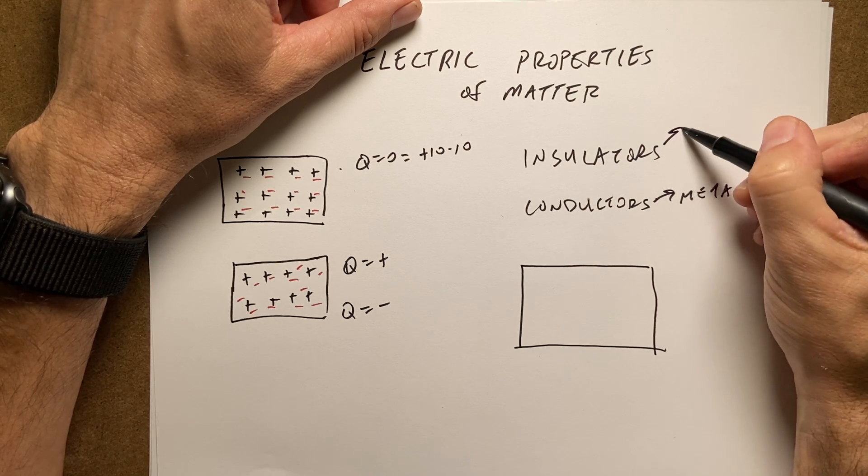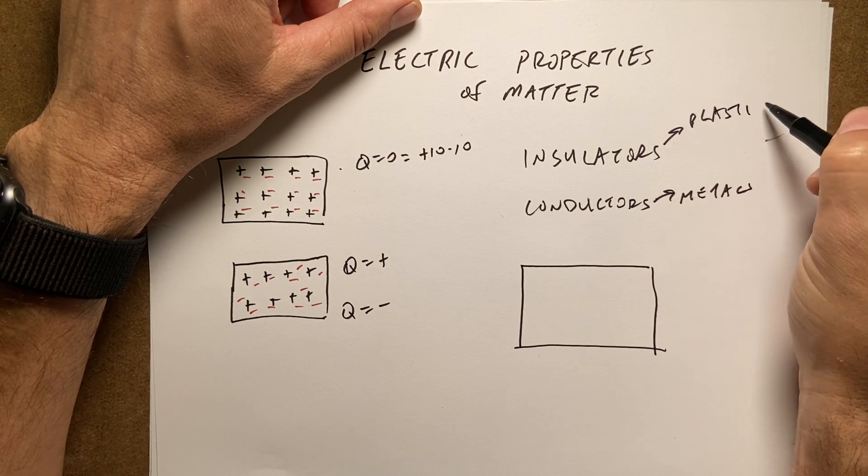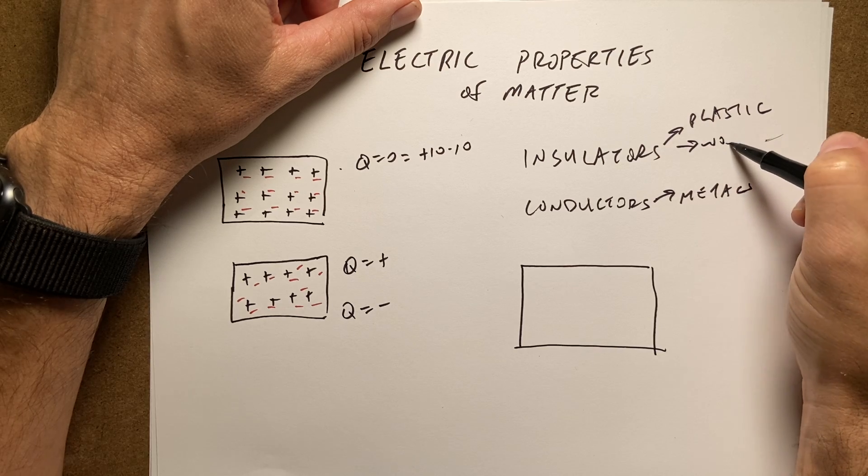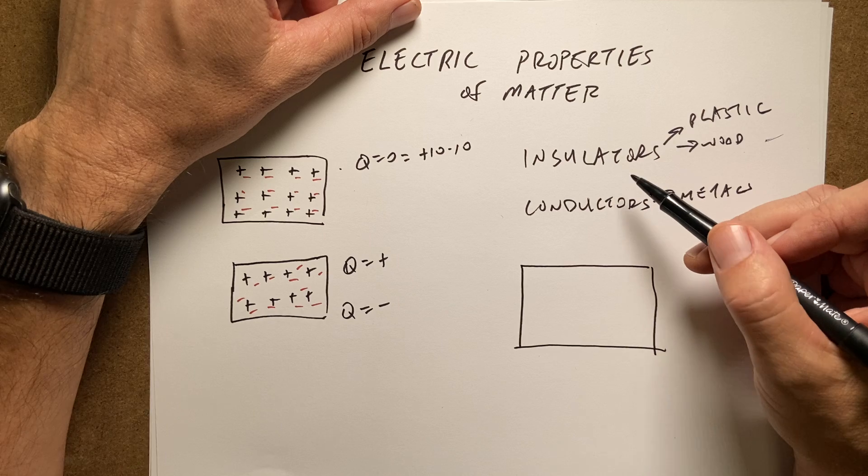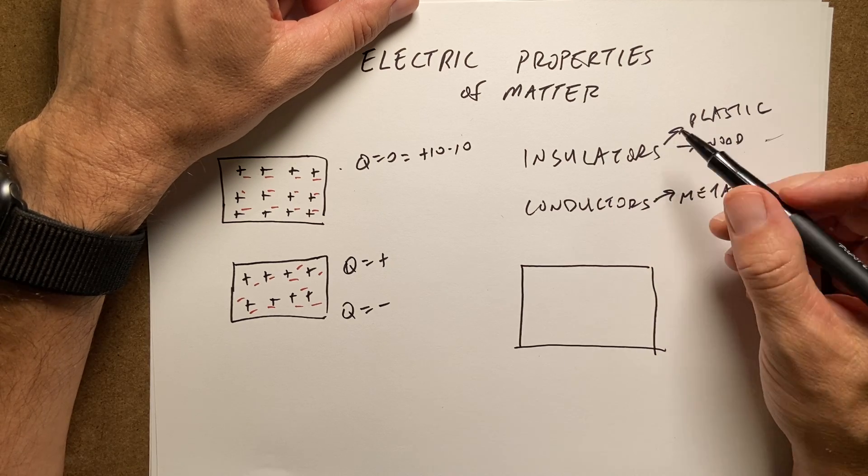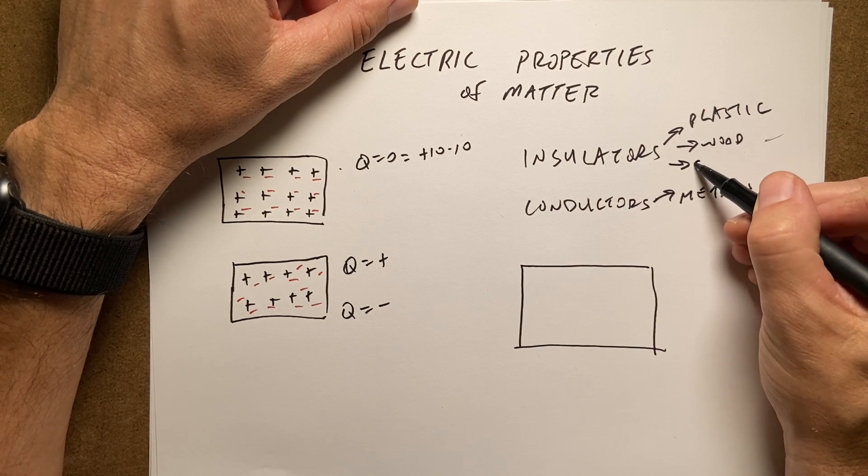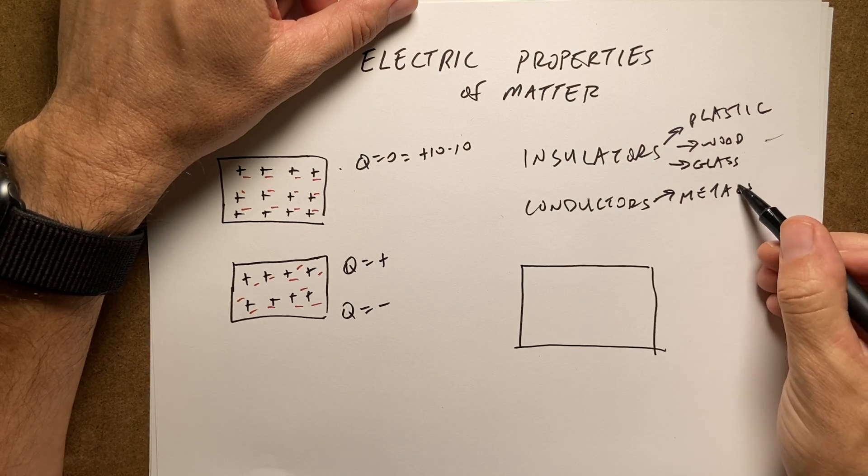And this would be plastic, wood. And some things can be an insulator and then become a conductor. Air is a great example. Glass. Metals.